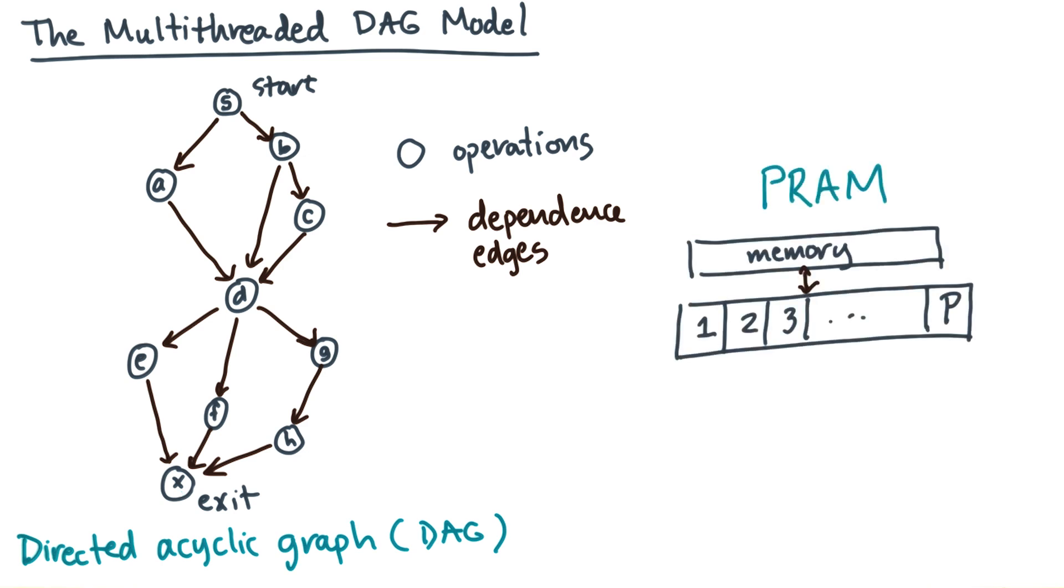Now, suppose you have a PRAM machine, and you want to use it to run the computation. You start by trying to find any operations that are ready to go. That is, all of their input dependences are satisfied. So in this example, take a look at the starting vertex. That one's ready to go.